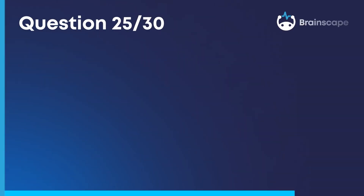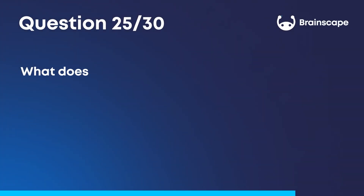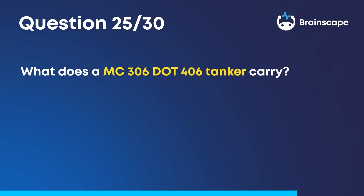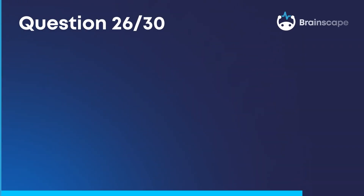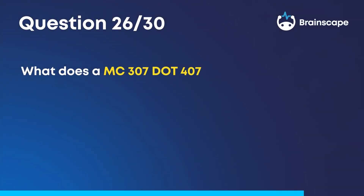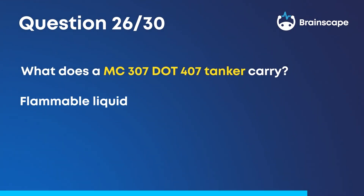Question 25. What does a MC-306/406 tanker carry? Flammable and combustible liquids. Question 26. What does a MC-307/407 tanker carry? Flammable liquids, mild corrosives, or poison.